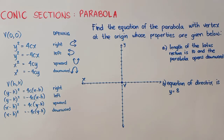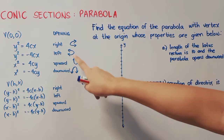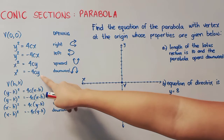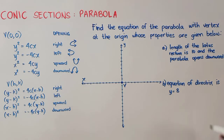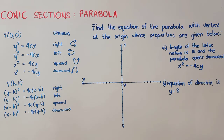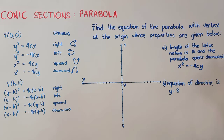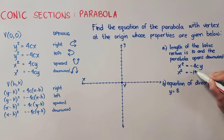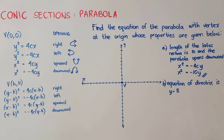Let's start with (a). The length of the latus rectum is 10 and the parabola opens downward. Since our vertex is at (0, 0) and it opens downward, we will be using the form x² = −4cy. Our latus rectum is equal to 4c, so 4c will just be substituted by 10. Therefore, our final answer is x² = −10y.